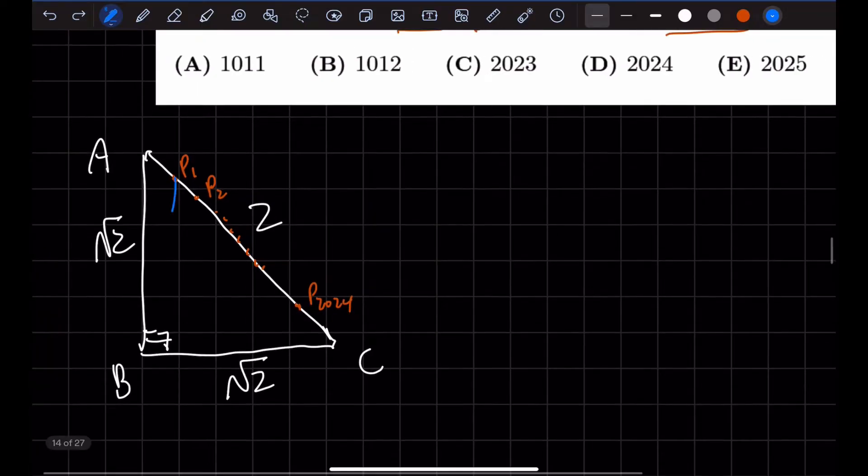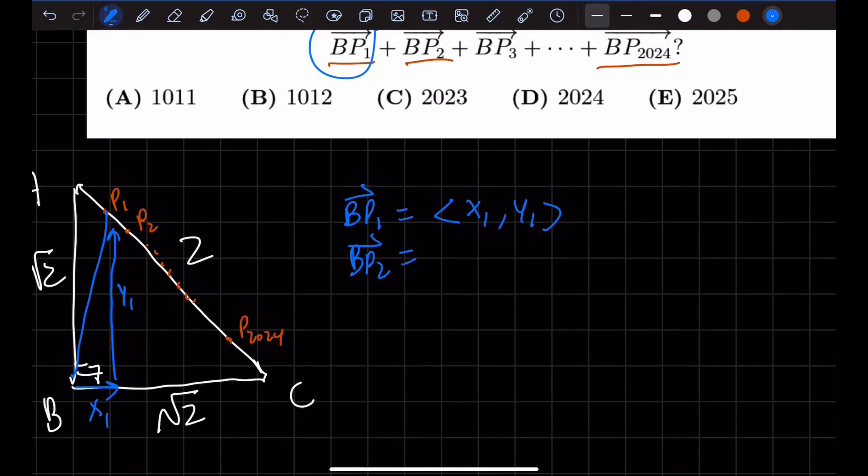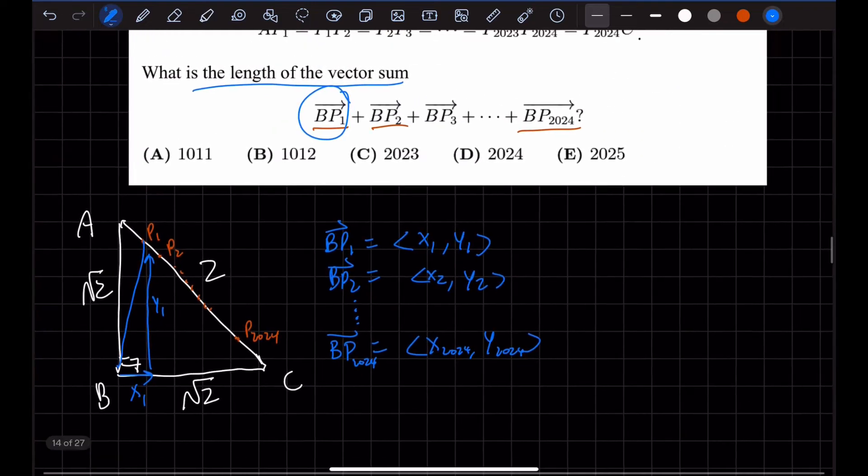Let's just look at BP₁. So BP₁, let's say if this goes X amount in the X direction and Y₁ amount in the Y direction. So the vector BP₁ would be ⟨X₁, Y₁⟩. So we found the vector BP₁. And let's say the vector BP₂ is ⟨X₂, Y₂⟩, all the way down to BP₂₀₂₄ would be ⟨X₂₀₂₄, Y₂₀₂₄⟩. So how can we find out the sum of all these vectors?